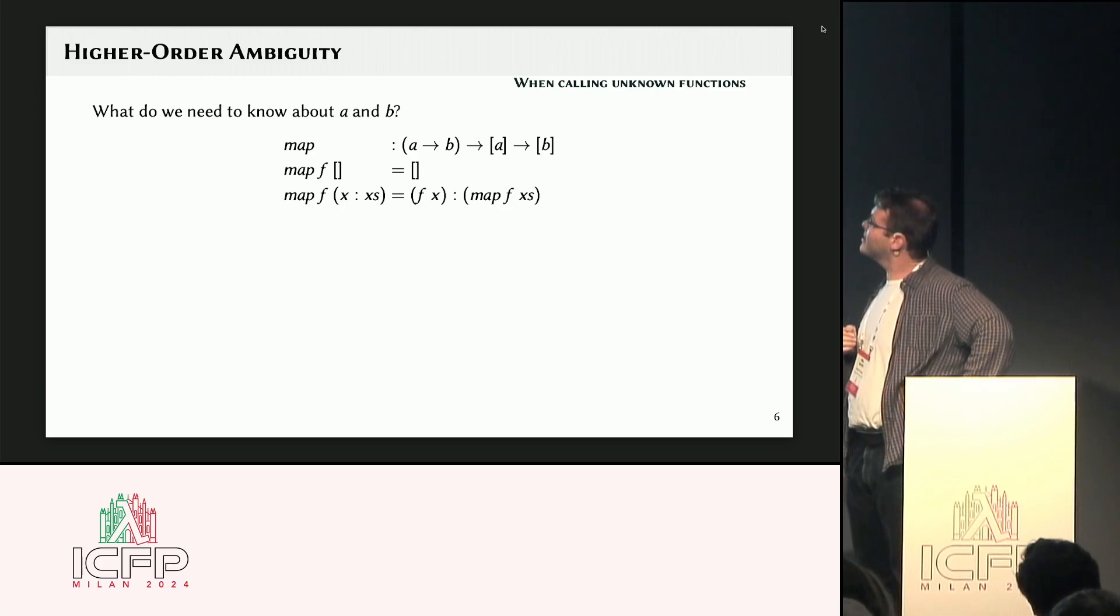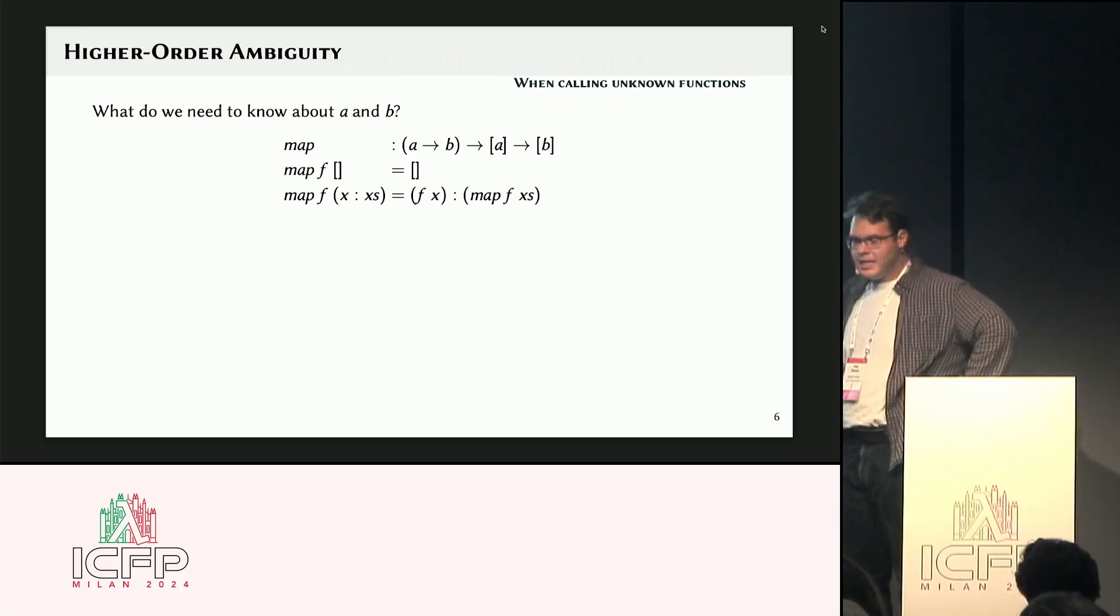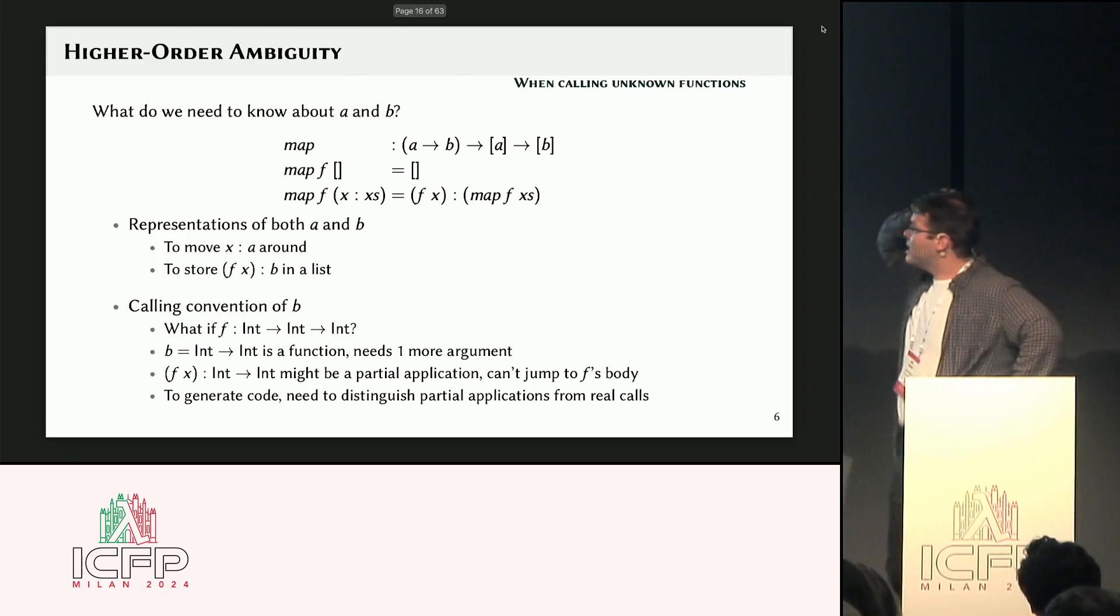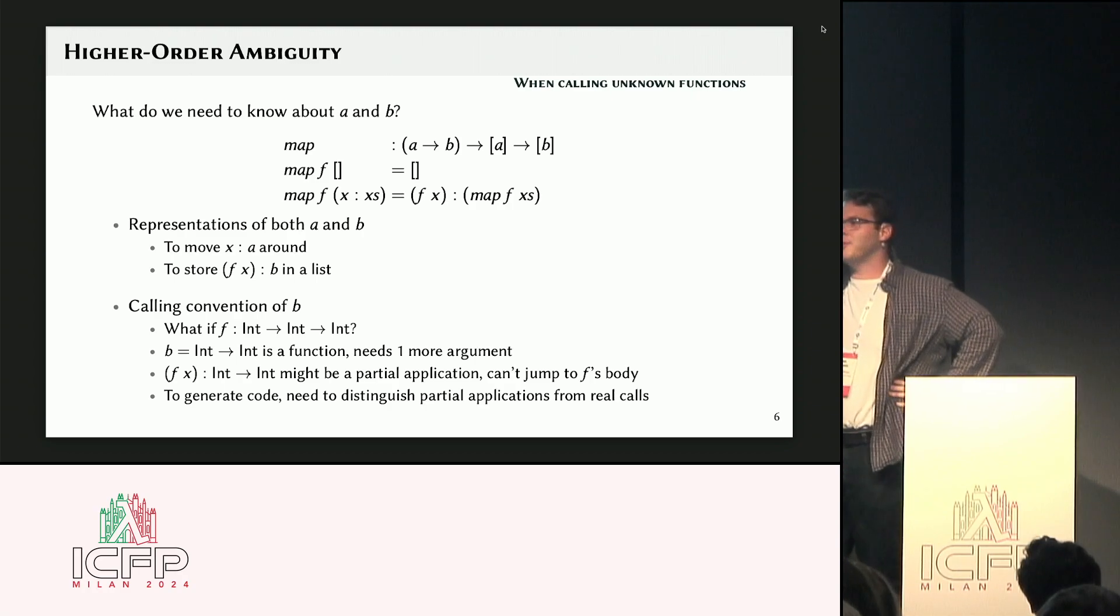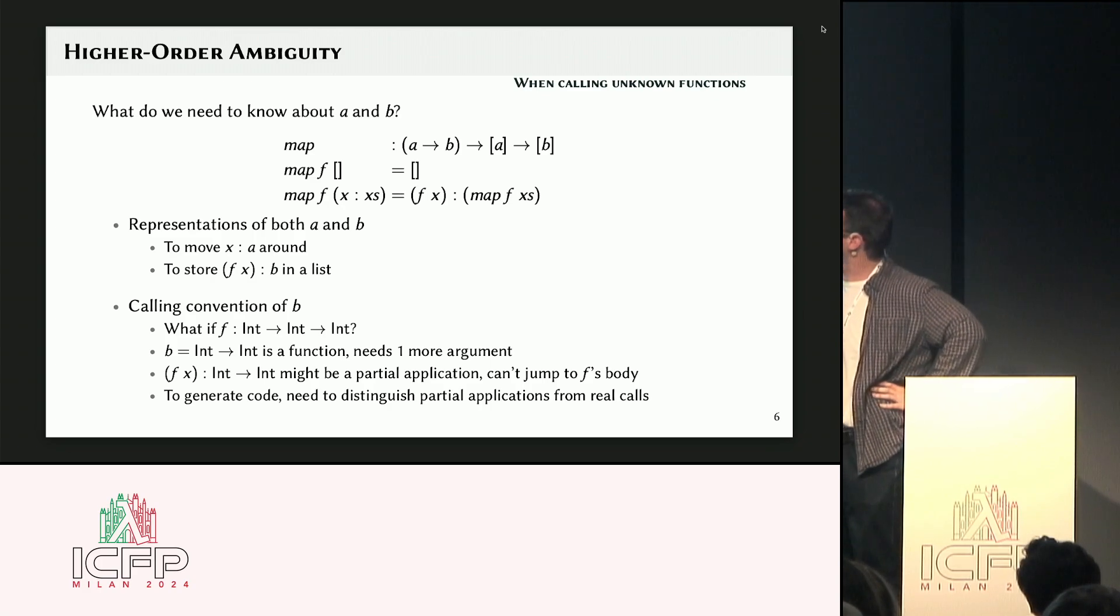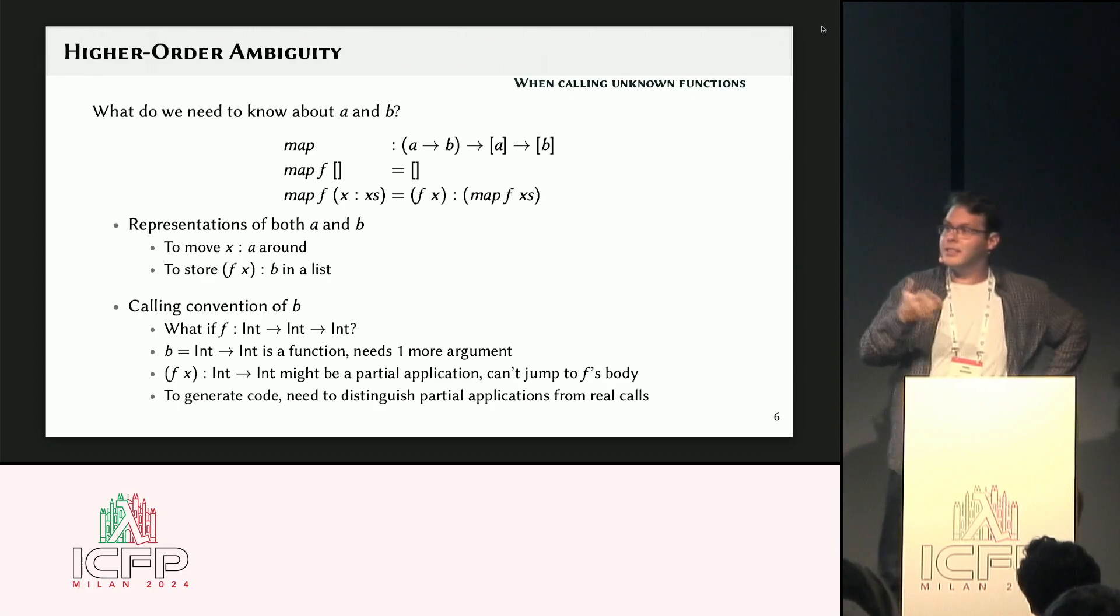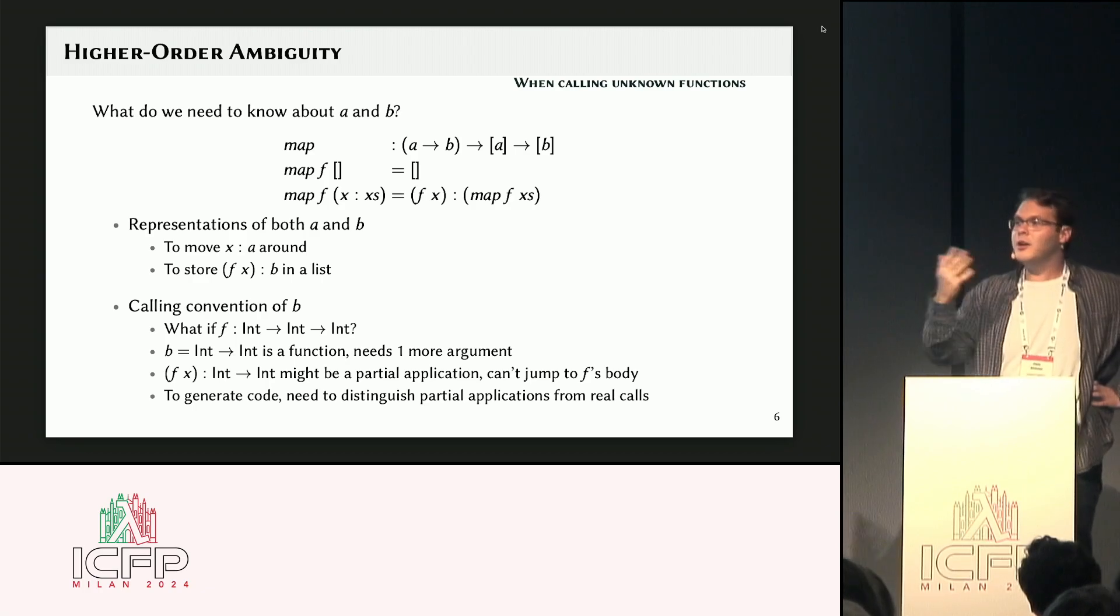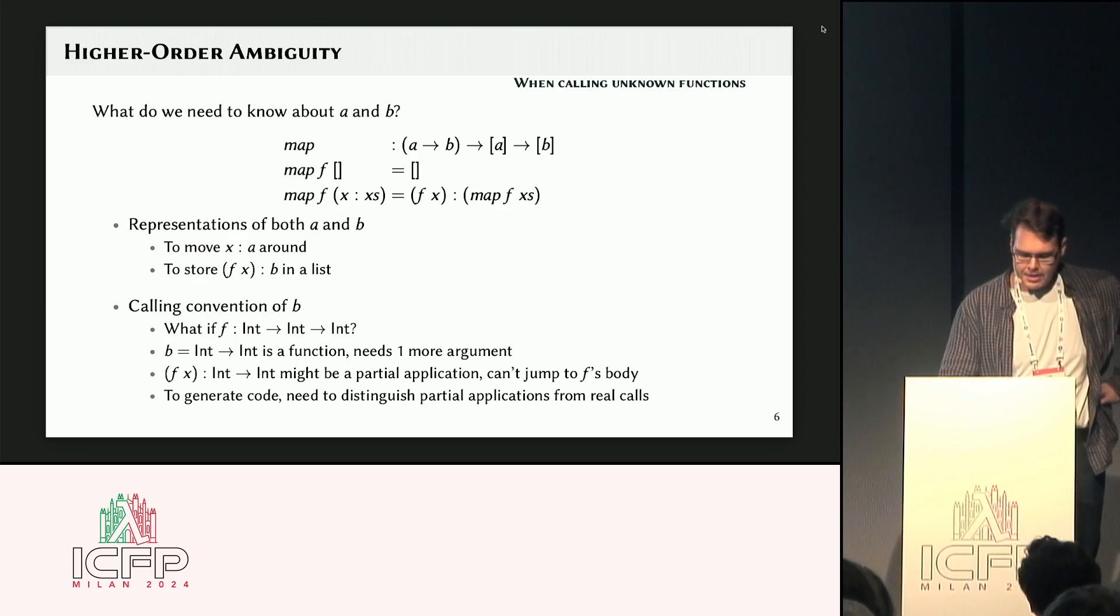There we go. And things get yet more complicated in higher order functions, right? So here's the, well, familiar mapping function. So I need to know about A's and B's to move things from one list to another clearly. But also, there's this call of F to X. And what does that really mean? Is this really a function call where I'm going to jump to the function and execute it? Or is it maybe a partial application because F is expecting more arguments and that corresponds to different code that either I have to check something at runtime, or maybe there's some other invariance at compile time that I have to maintain.